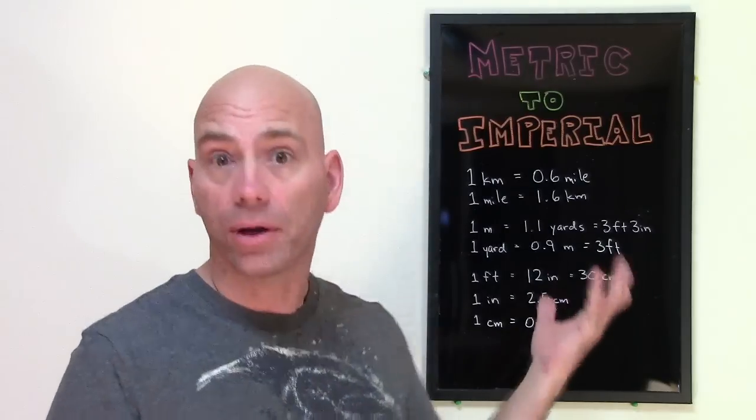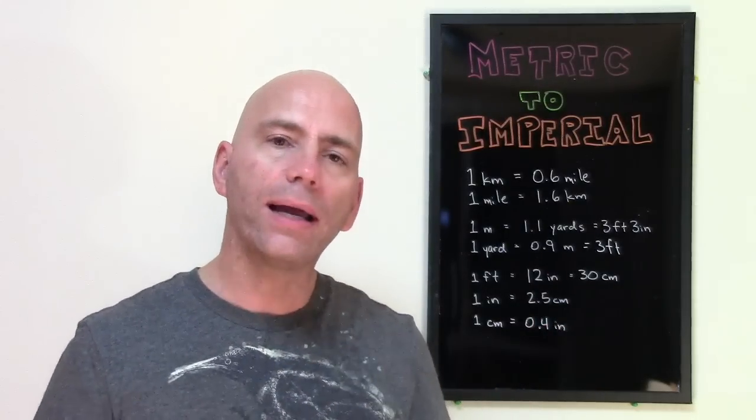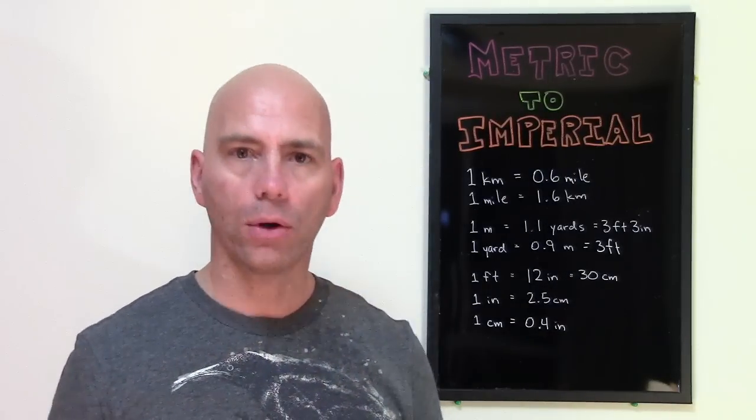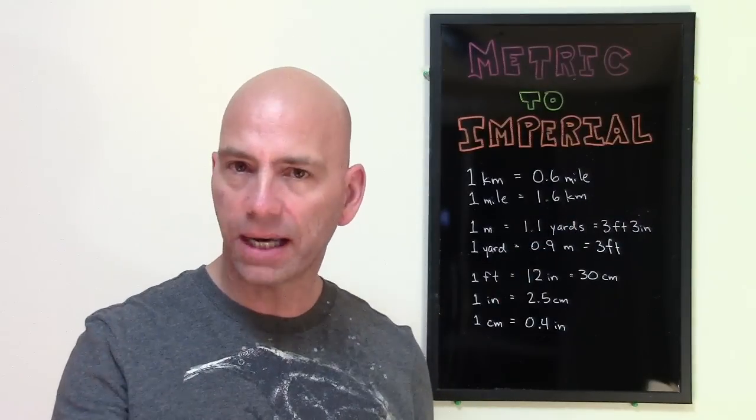So what is the metric system? Or the imperial system. The metric system or the imperial system, it's a way of measuring things - length or weight or volume.